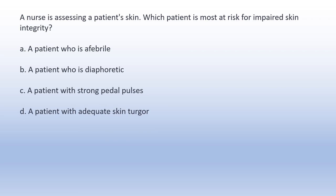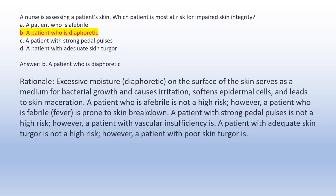A nurse is assessing a patient's skin. Which patient is most at risk for impaired skin integrity? A. A patient who is afebrile. B. A patient who is diaphoretic. C. A patient with strong pedal pulses. D. A patient with adequate skin turgor. Answer B: A patient who is diaphoretic. Rationale: Excessive moisture on the surface of the skin serves as a medium for bacterial growth, causes irritation, softens epidermal cells, and leads to skin maceration. An afebrile patient is not high risk; however, a febrile patient is prone to skin breakdown. A patient with strong pedal pulses is not high risk, but one with vascular insufficiency is. A patient with adequate skin turgor is not high risk, but one with poor skin turgor is.